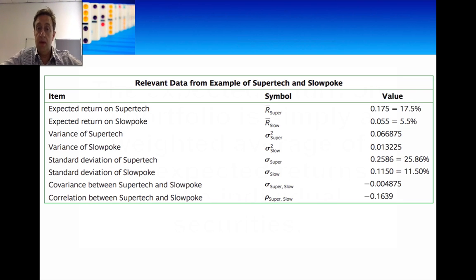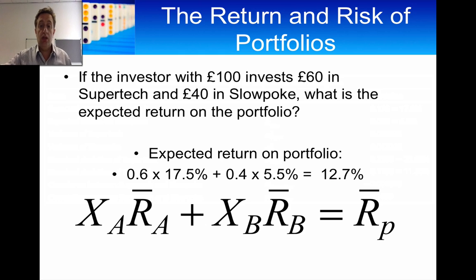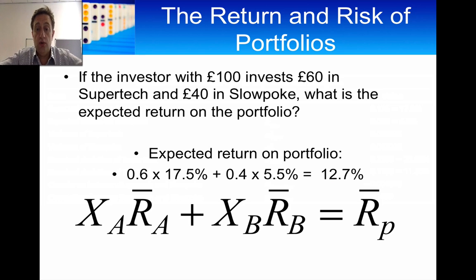We're going to use this data to find the expected return and the variance of a portfolio of the two securities. We start by saying we have £100 to invest. We're going to split that £100 into £60 going into Supertech and £40 going into Slowpoke. The weights of each security in the portfolio are 0.6 for Supertech and 0.4 for Slowpoke.